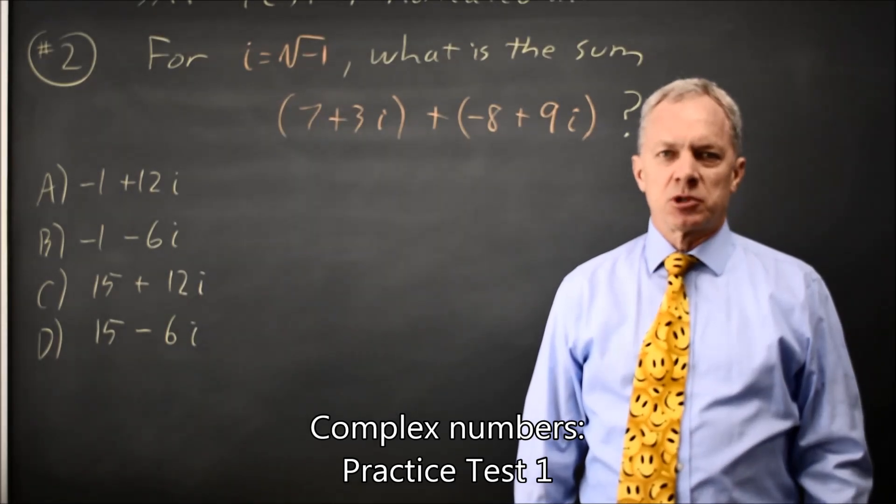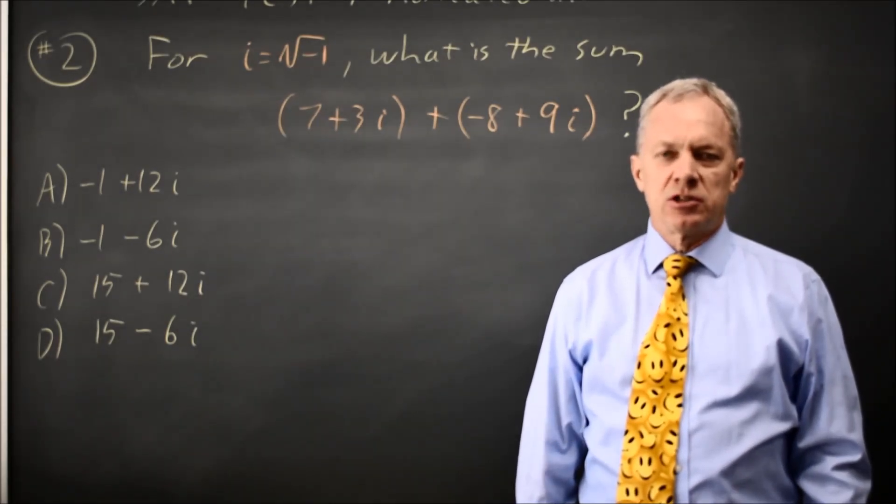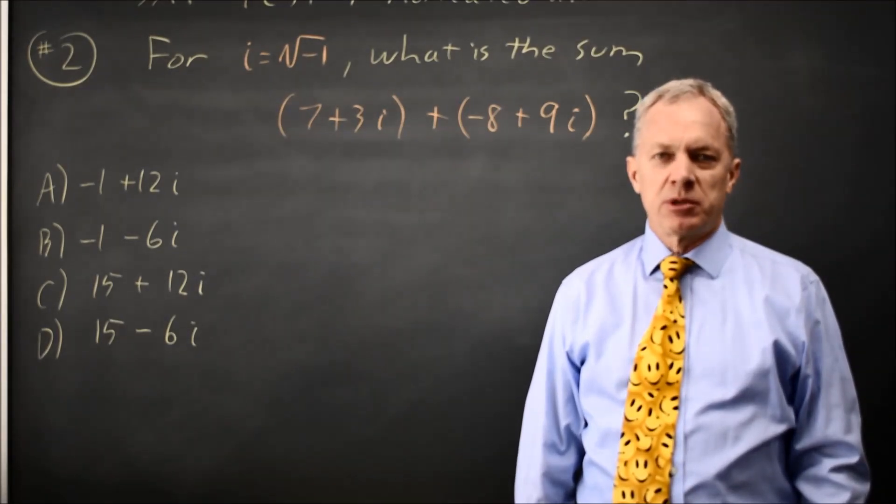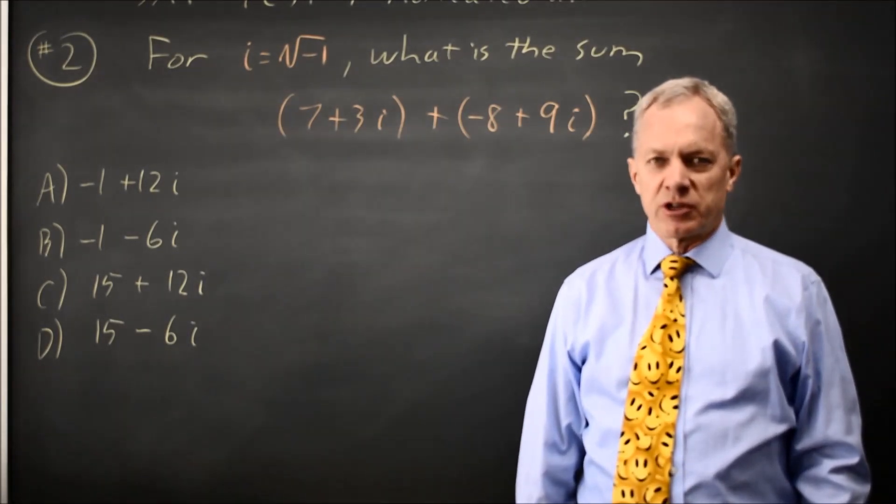This is non-calculated question number two. College Board asks us to add two complex numbers where a complex number is of the form a plus bi, and i is the square root of negative 1.